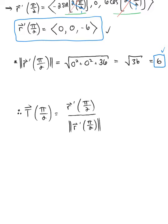Now notice here with our tangent vector, we have a scalar multiple of 6. So I'm going to pull that to the front. We have 6 times the vector ⟨0, 0, -1⟩, and that's all divided by the magnitude of 6.